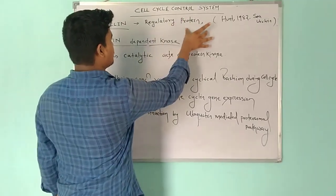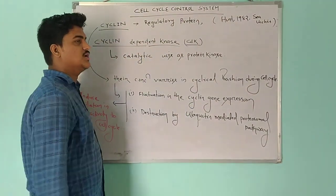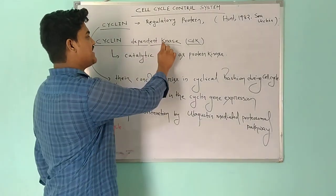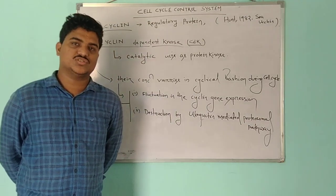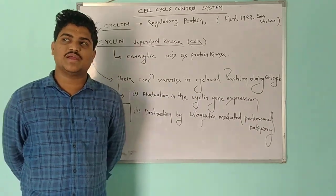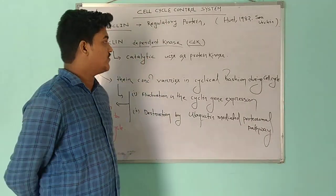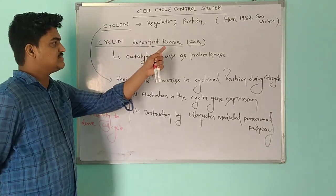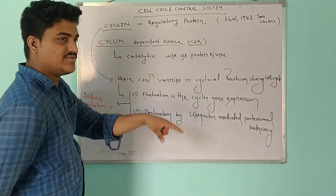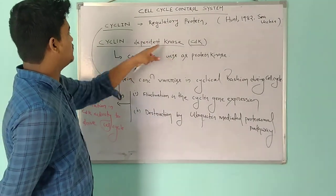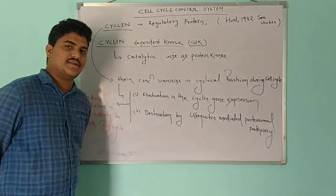Cyclin is the regulatory protein. Cyclin-dependent kinase — kinase is the enzyme normally involved in phosphorylation or phosphate addition and removal reactions. So cyclin-dependent kinase means the kinase whose activation depends upon the cyclin. That is known as cyclin-dependent kinase.